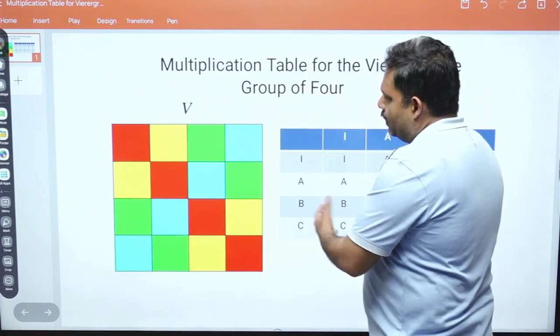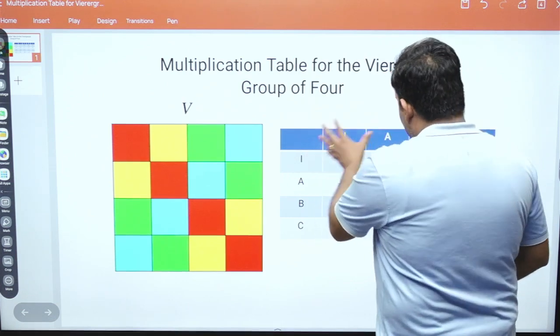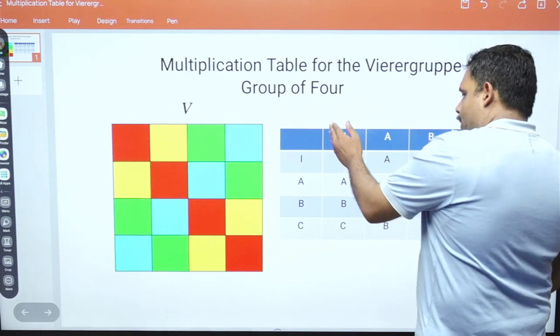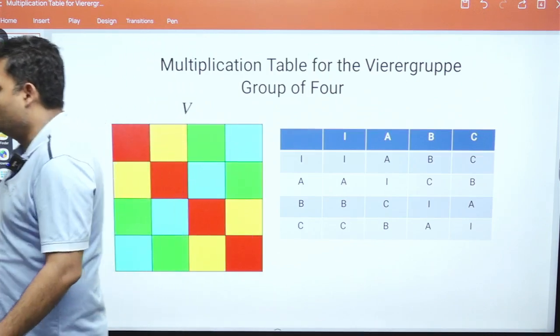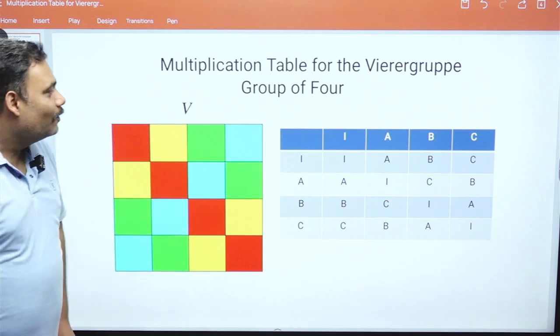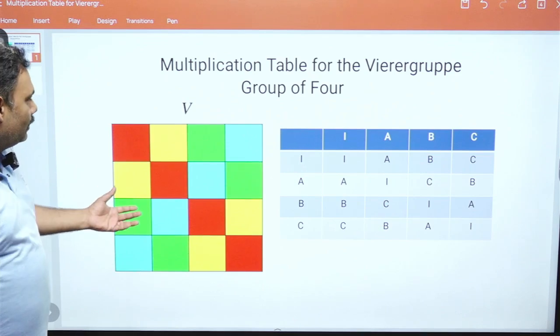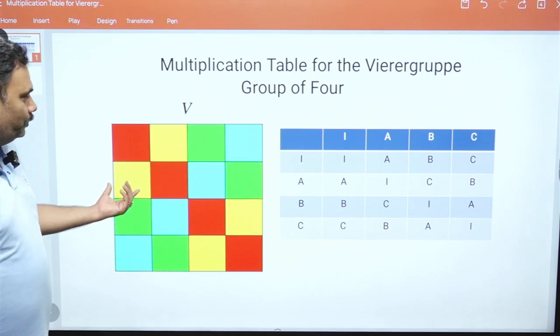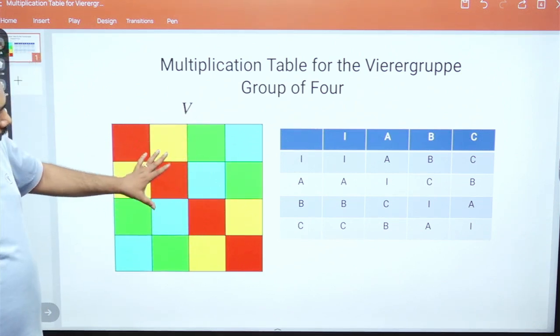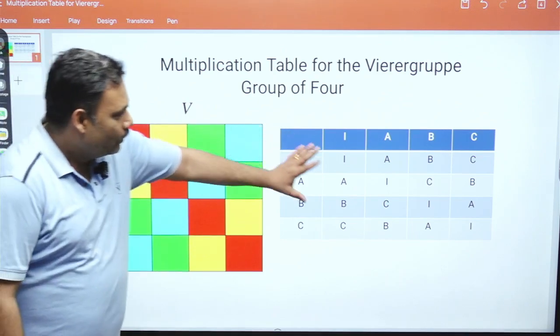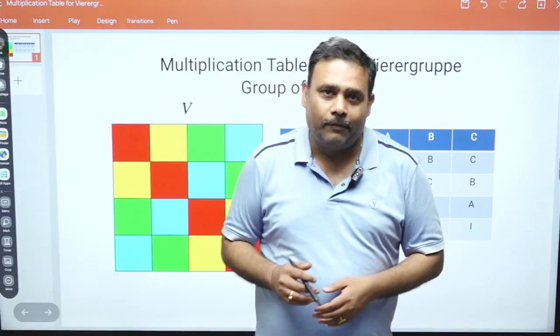So now you can easily figure out that this particular group where we are using this notation ABC, we can also give it in some color code also. So if someone will give you this color code, you have to just identify what will be the inverse of yellow and what will be the inverse of green. Try to see this particular figure very carefully and try to match with this one. You can give the correct explanation if you have all the information of the group.